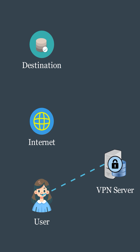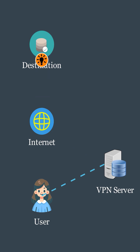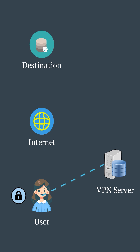At the server, the data is decrypted. The query then travels normally to its destination on the internet. The result from the destination is returned to the VPN server, where it is encrypted again before sending back to your device. Finally, the VPN client on your device decrypts the data, ensuring that your information remains secure and private throughout the entire process.